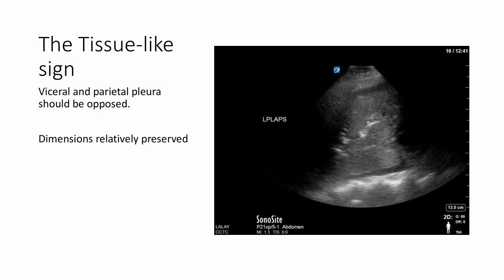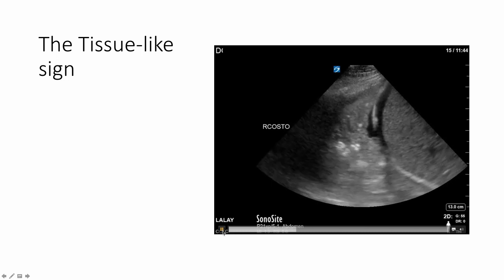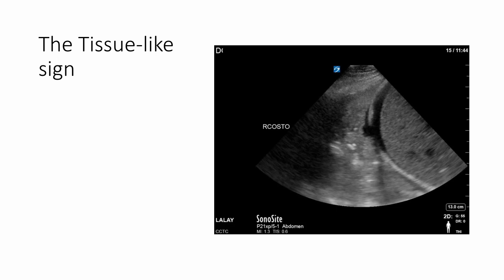The next slide represents this a little bit better. We have liver, diaphragm, a little bit of perihepatic fluid, and relative maintenance of lung architecture. Notice that the lung parenchyma looks awfully similar to the liver parenchyma. And here you can see it going with the respirations of the patient.